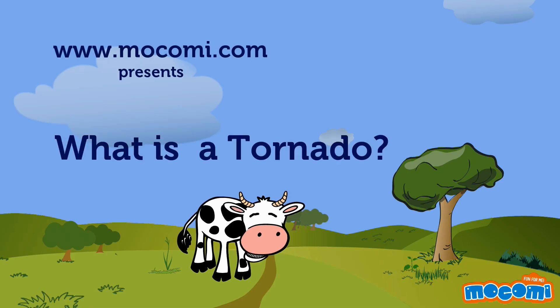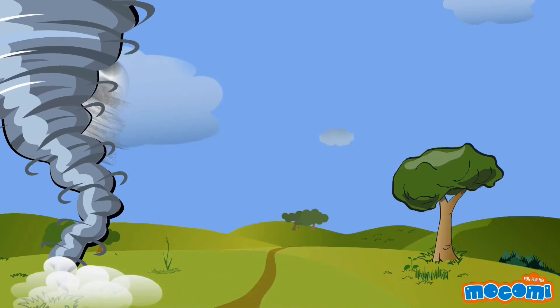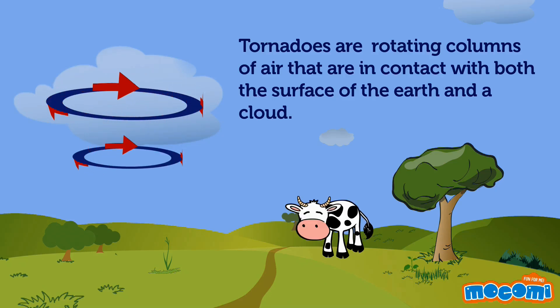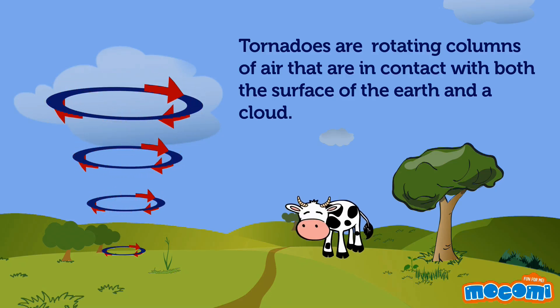What is a Tornado? Tornadoes are rotating columns of air that are in contact with both the surface of the earth and a cloud.